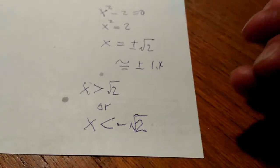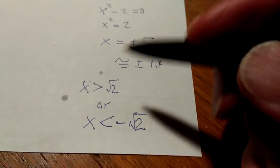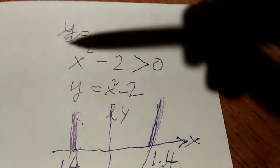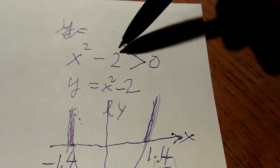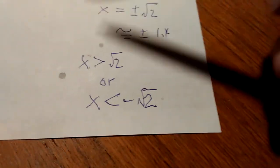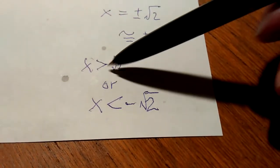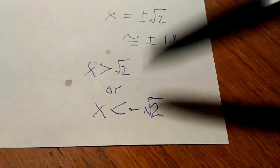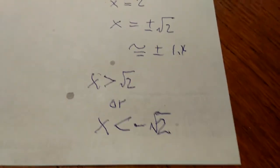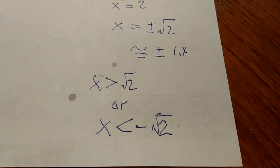This is the solution and this is the end of the question. x squared minus 2 larger than 0 — the answer is x is larger than root 2 or x less than negative root 2.